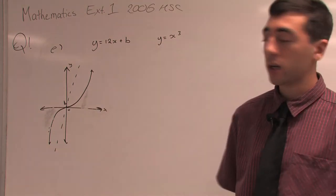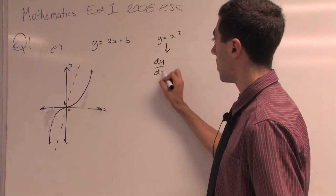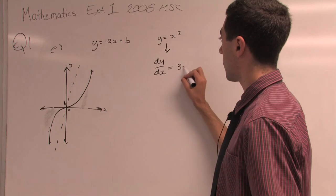So first we're going to differentiate our cubic function. We'll get dy/dx = 3x².